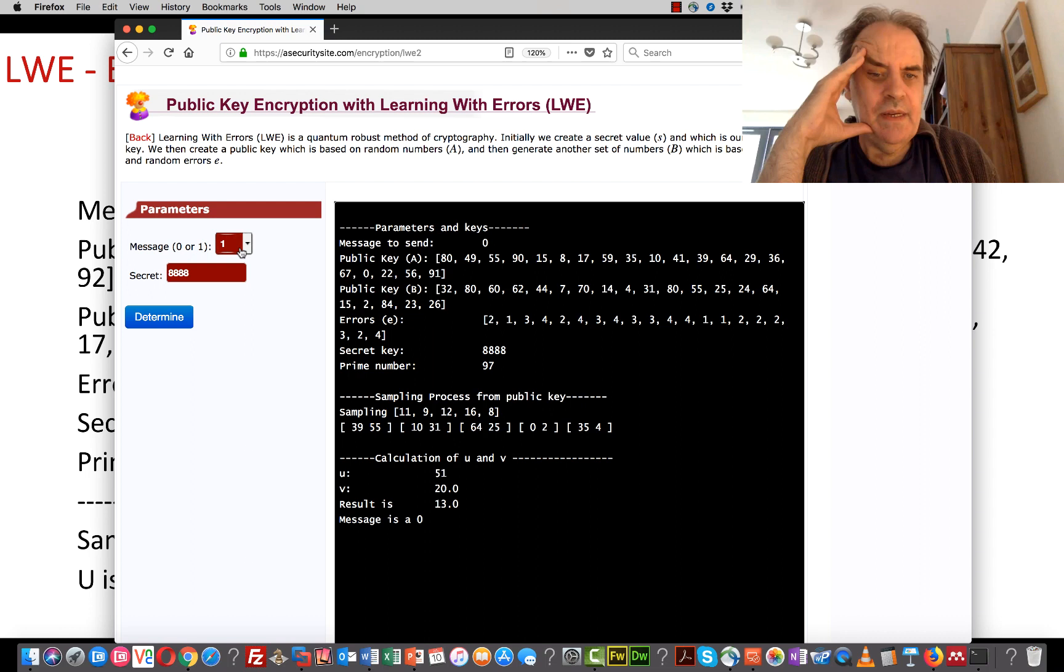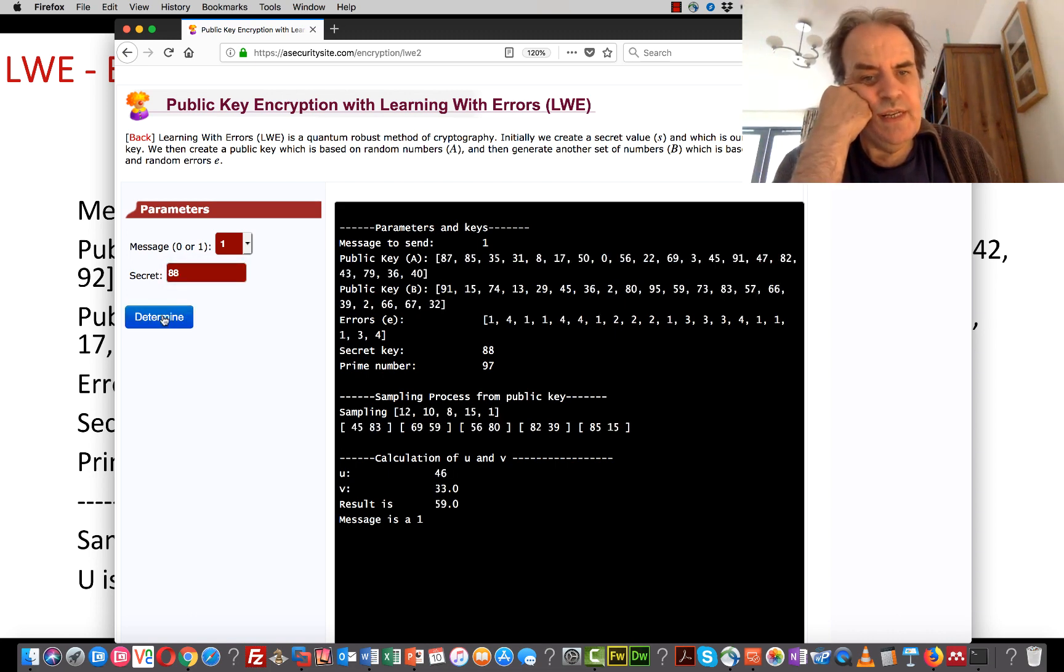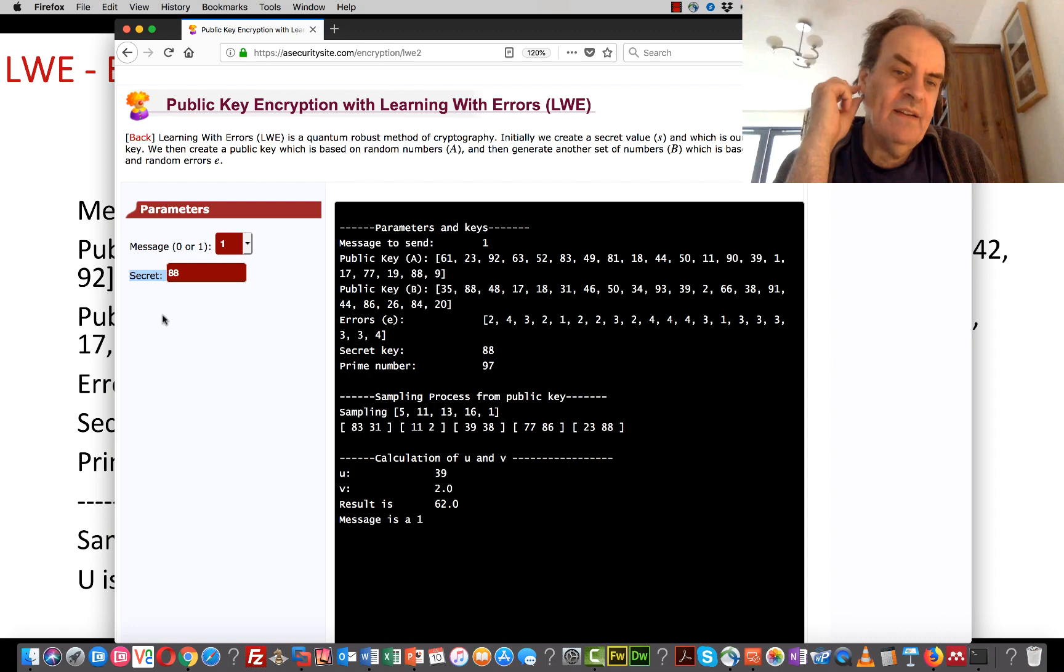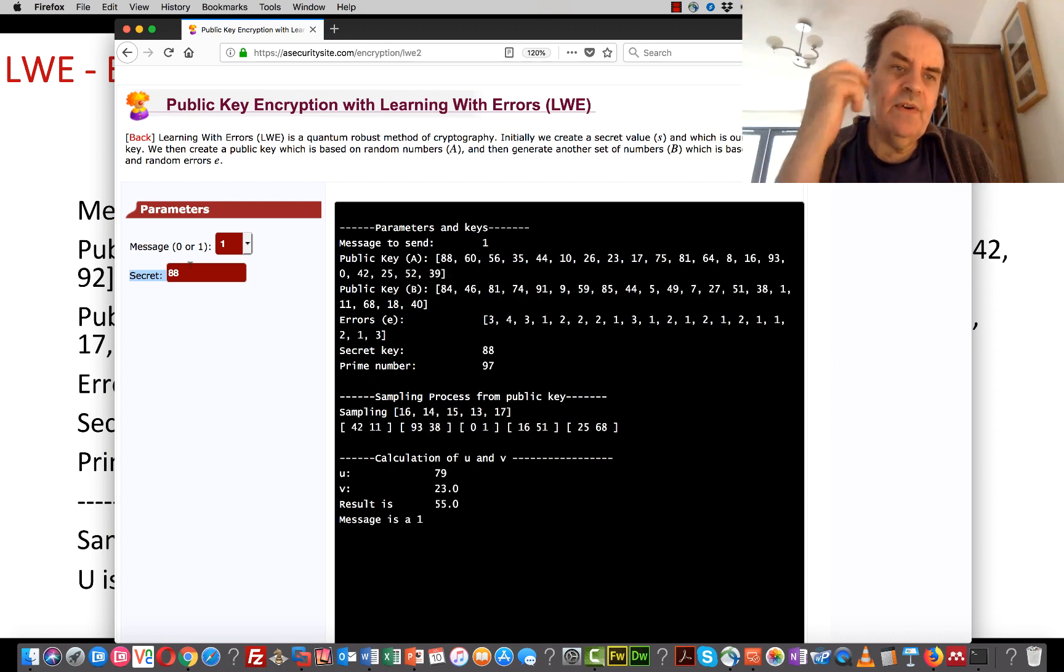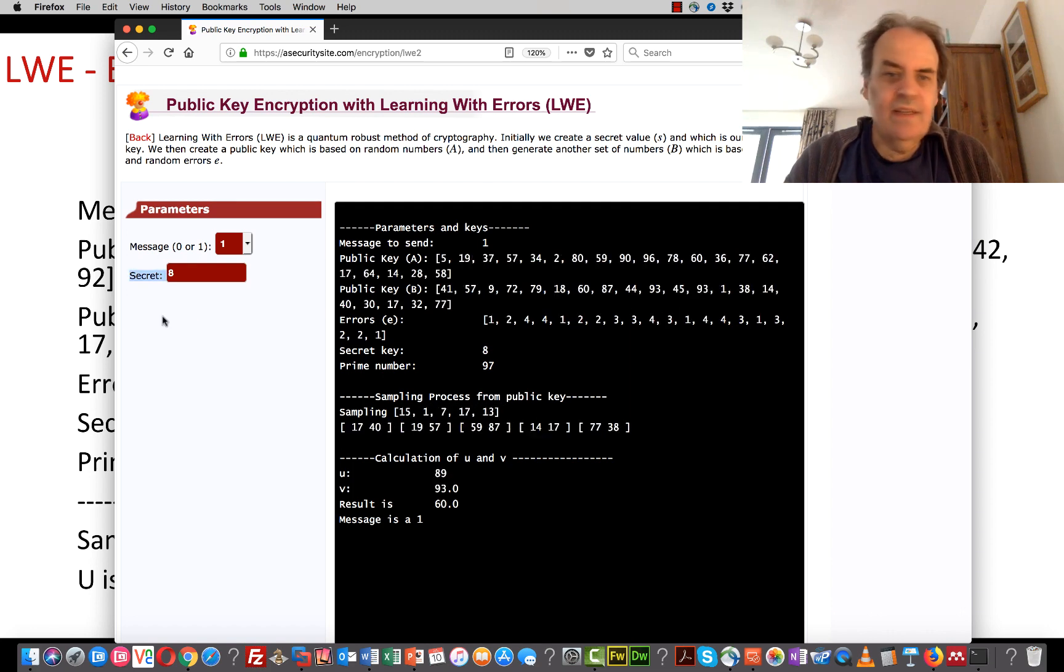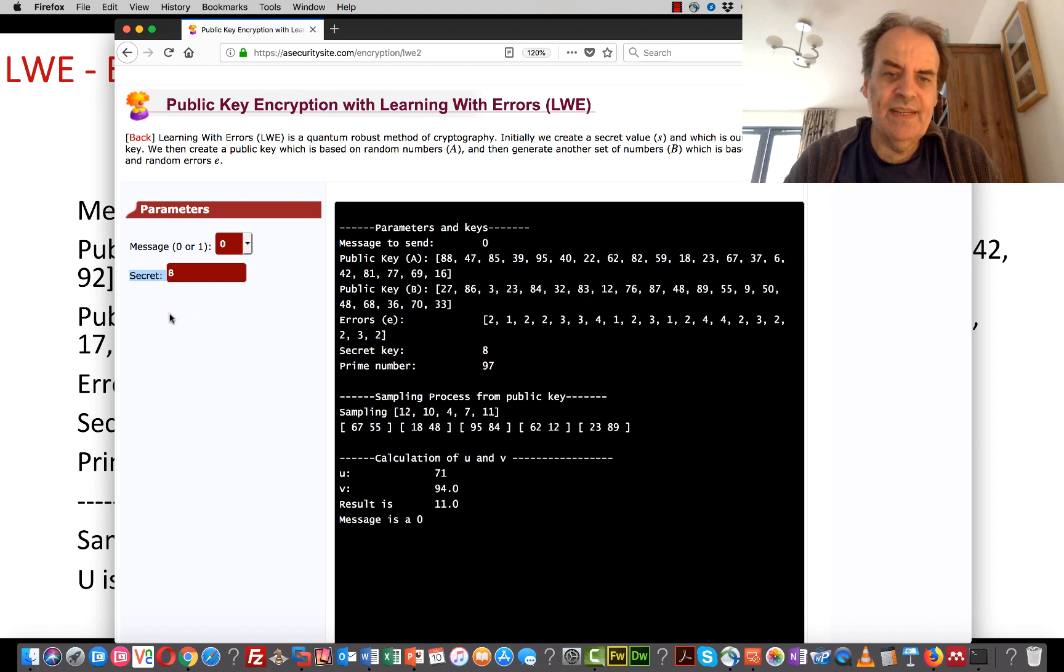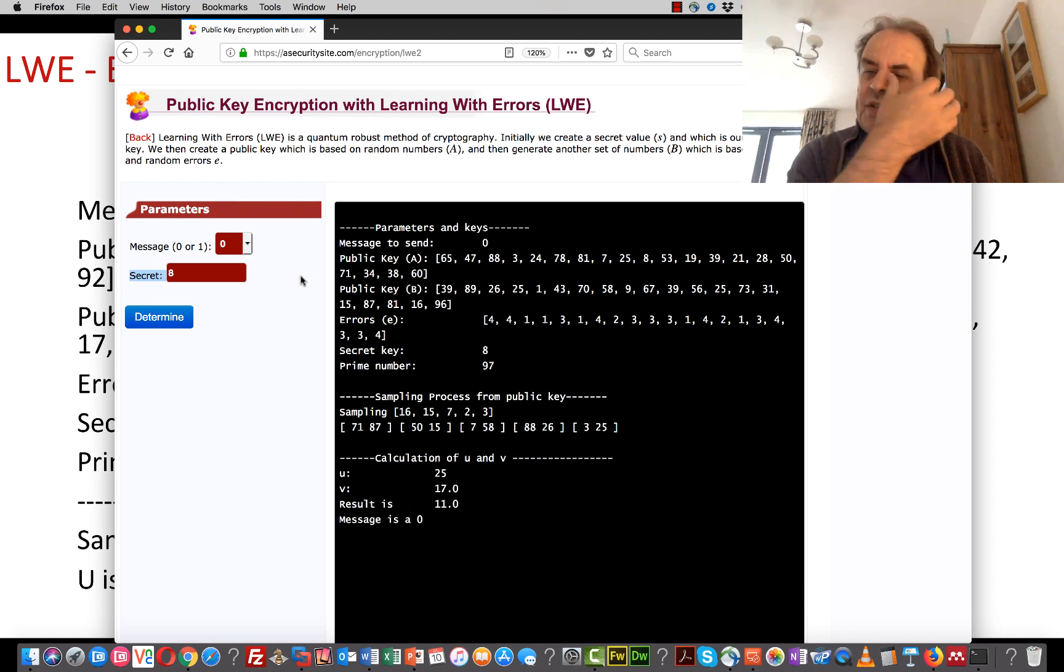Let's try it with a 1, and we see we get a 1. We can try this again and again with a value of 88 for a secret, and keep going—every single time it should give us the right value. I'll make our secret really low as 8 to see if it still works, and it's working perfectly. The values are always above Q upon 2. We'll try for a 0 and keep testing. We can see the message is 0 correctly.